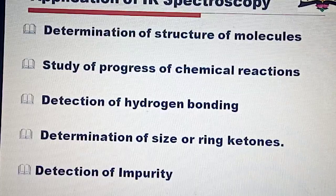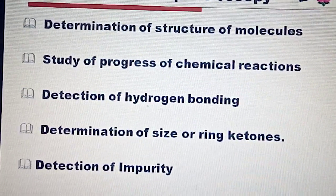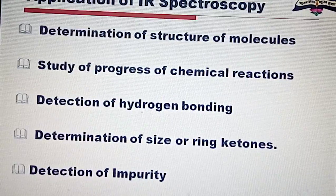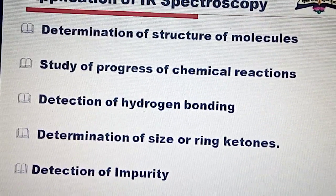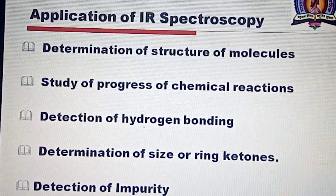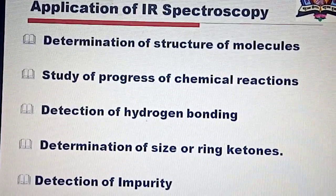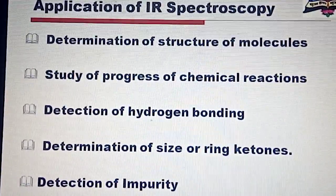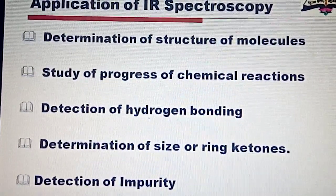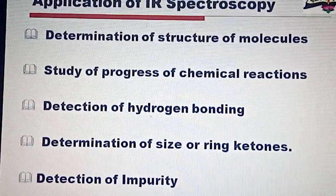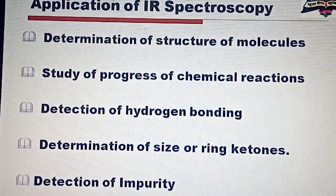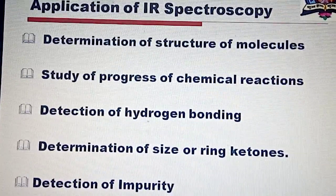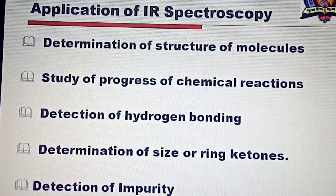The fifth application of IR spectroscopy is that it is useful for detection of impurities. A particular functional group absorbs at a particular frequency, known as the group frequency. If a hydrocarbon contains a very small amount of ketone, it can be detected by IR spectrum because a ketone shows a strong absorption band at 1720 cm⁻¹ while hydrocarbons do not. Similarly, a small quantity of alcohol in a hydrocarbon mixture can be easily detected by observing a broad absorption band due to OH stretching frequency, which is absent in hydrocarbons.